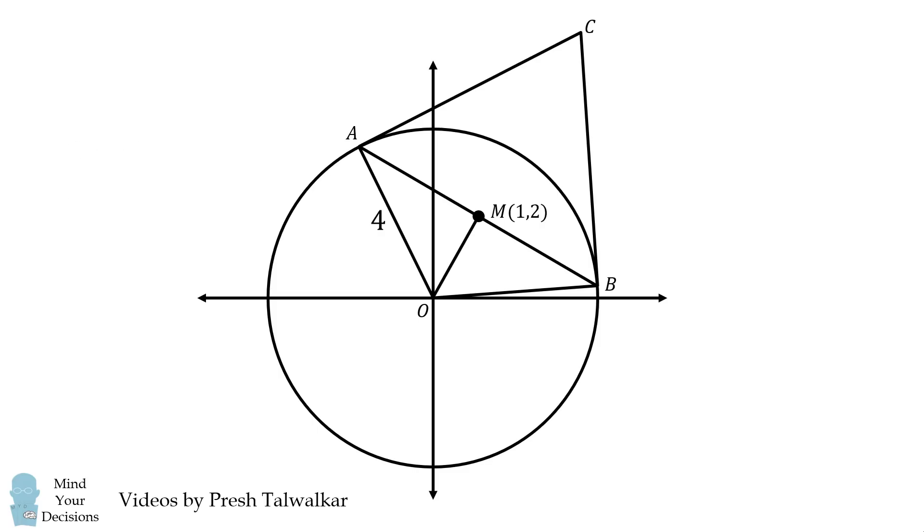To get started, we'll draw OM. We can calculate the length of OM using the distance formula. OM will have a length equal to the square root of 1 squared plus 2 squared, which will be equal to the square root of 5.